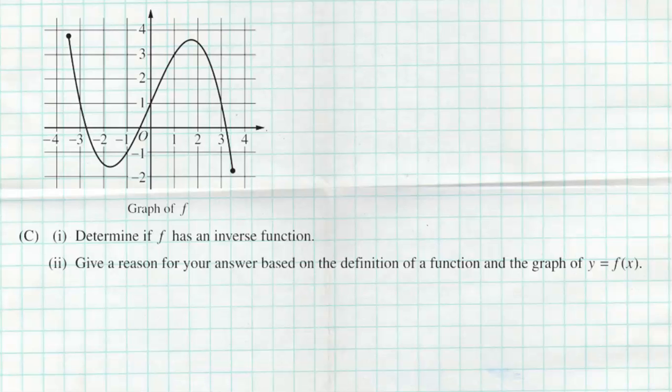Moving into part C. Part C is a two-parter, but the second part is asking us to explain the first part. Determine if f has an inverse function. Give a reason for your answer based on the definition of a function. That's really important. They want us to actually base on the definition of a function, which is that every input has exactly one output.